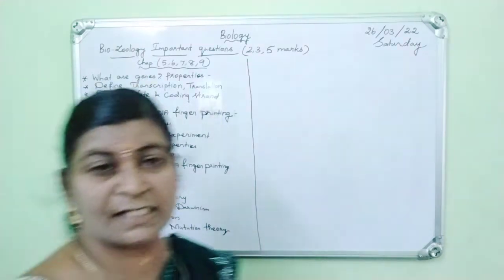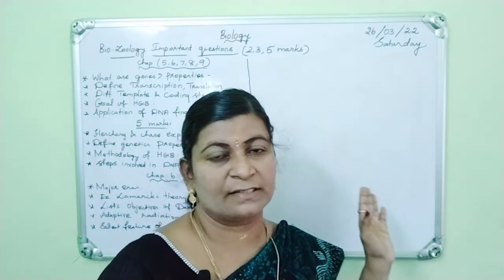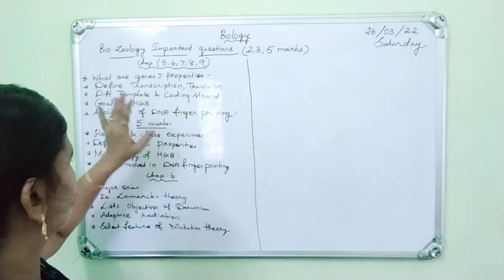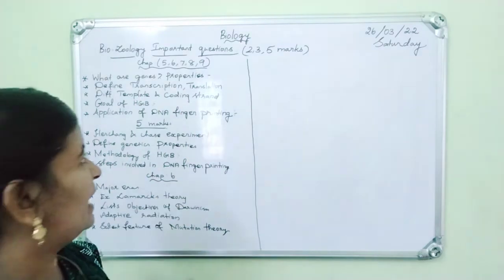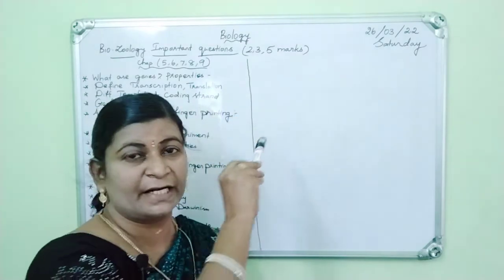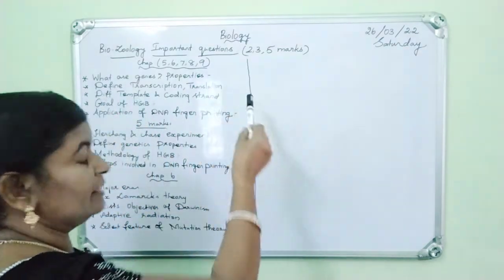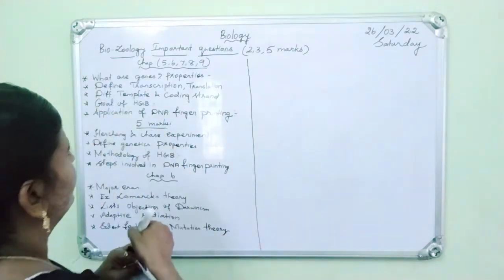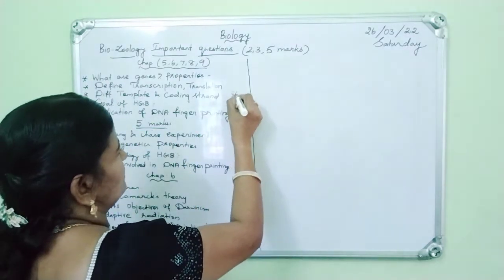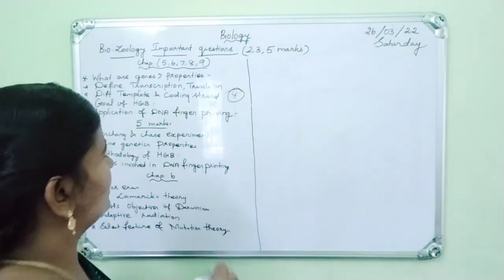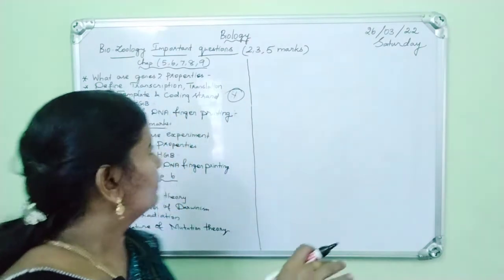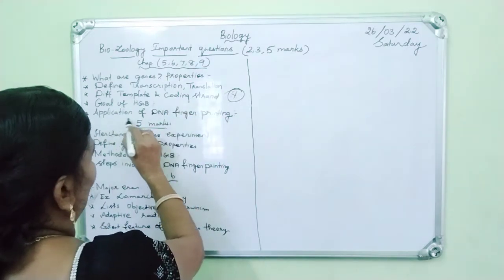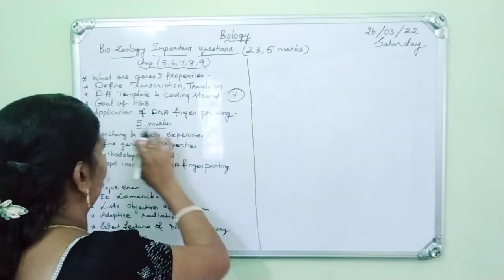In Chapter 5, the first two or three mark question is: what are genes and the properties of genes? It is an important question. Then define transcription or define translation. Then differentiate between template strand and coding strand — it is a most important question.